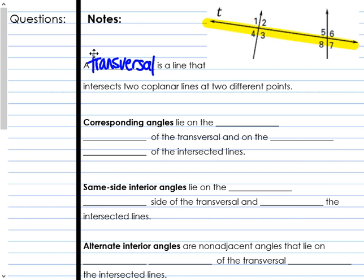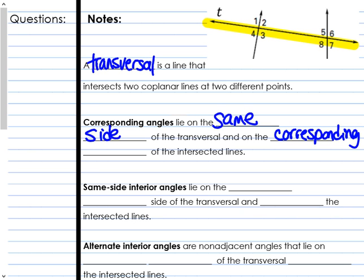Those angles have different relationships. First up, we have corresponding angles. Corresponding angles lie on the same side of the transversal and on the corresponding sides of the intersected lines. For example, angle one and angle five are corresponding angles because they're on the same side of the transversal — they're both above the transversal — and they are on the corresponding sides of the intersected lines, both to the left.